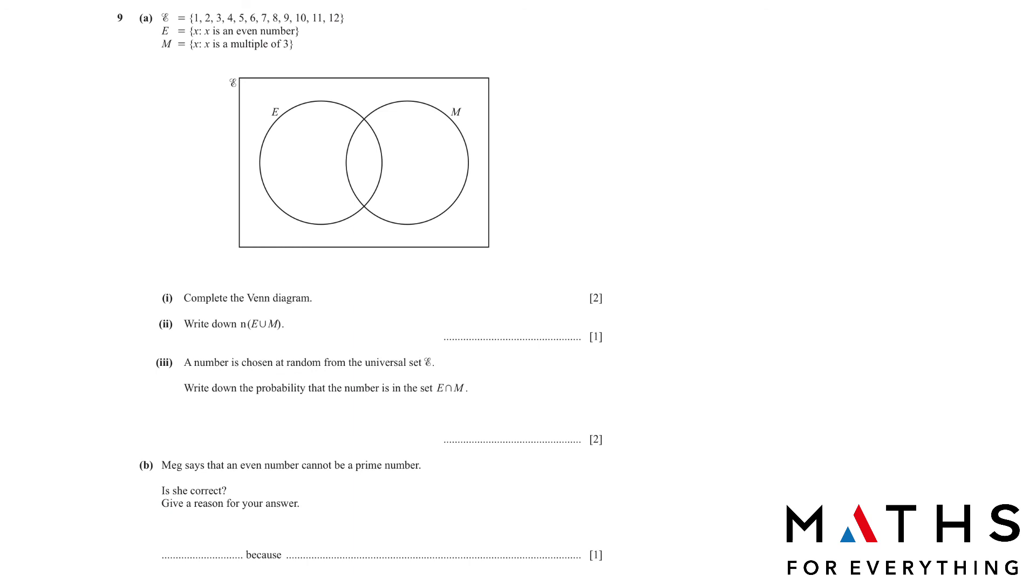Now this is the last question. Question number 9. We have been given the elements here: 1, 2, 3, 4, 5, 6, 7, 8, 9, 10, 11, 12. E is such that X is an even number. Even numbers are numbers ending with 2, 4, 6, 8, 10, and 12. And M is such that X is a multiple of 3. It means it is in 3 times table: 3, 6, 9, 12.